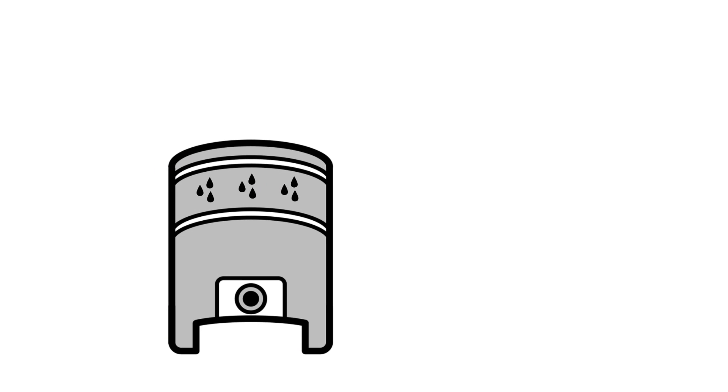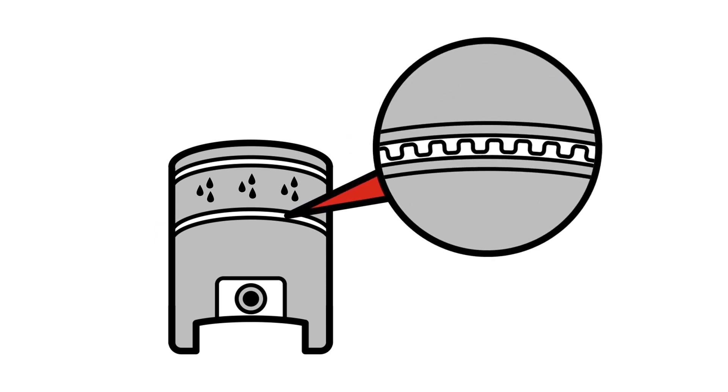Oil that has accumulated on the cylinder walls needs to be scraped off by the piston rings. The oil scraper ring's main function is to scrape oil off the cylinder walls back down into the crankcase.